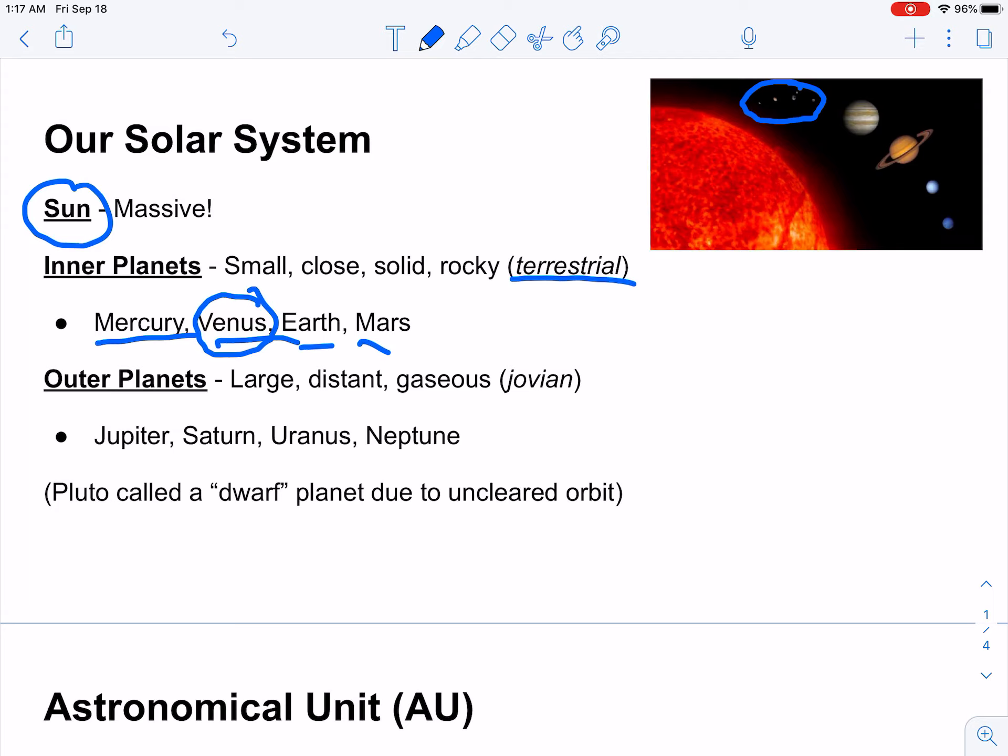The other planets, by contrast, are much larger and more distant and tend to be gaseous. We refer to them as Jovian. That's Jupiter, Saturn, Uranus, and Neptune. You can think of the last three as spelling out Sun.